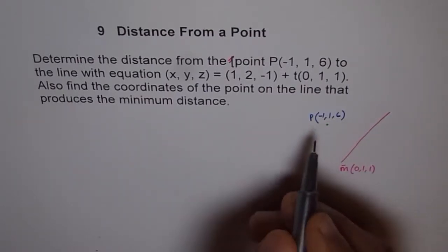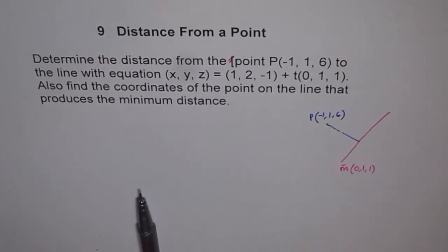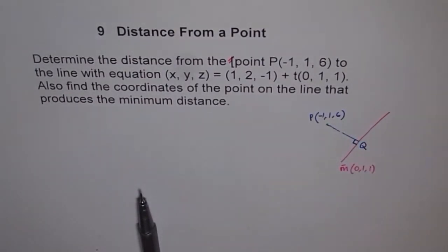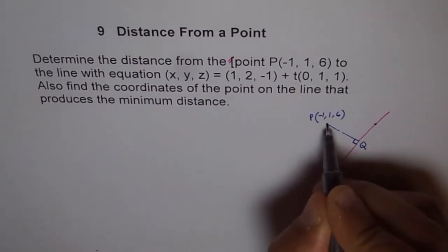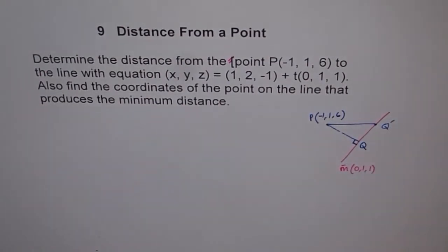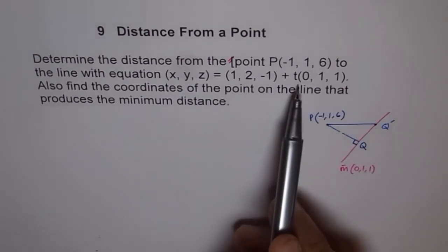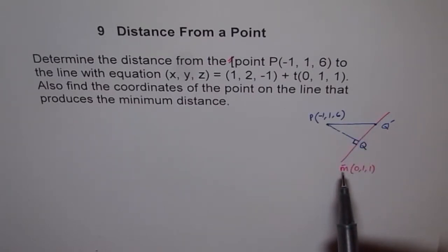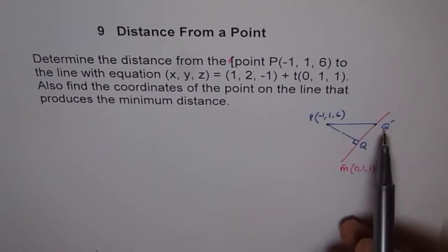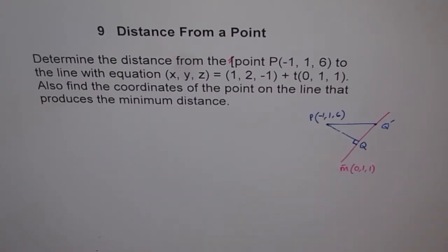We need to find a point Q on the line such that the angle there is 90 degrees. What we will do is assume a general point Q' on the line — it will have the parameter T in it. We'll find vector PQ' and do the dot product of PQ' with the direction vector M, and equate it to 0. Once we solve and get T, that value of T will give us the actual point Q which makes the shortest distance.